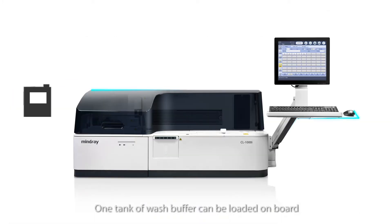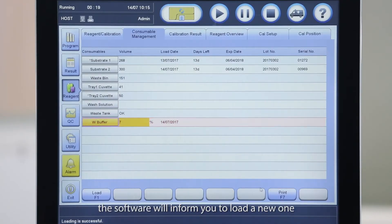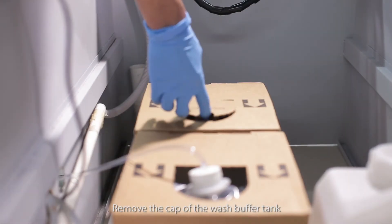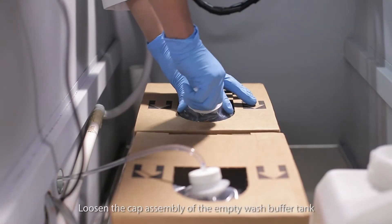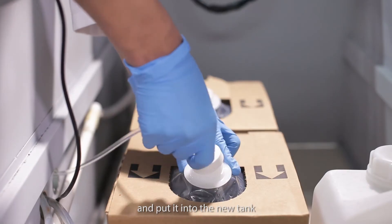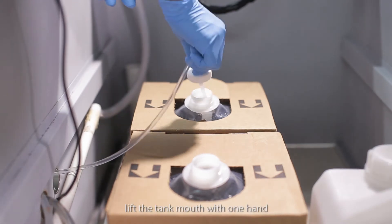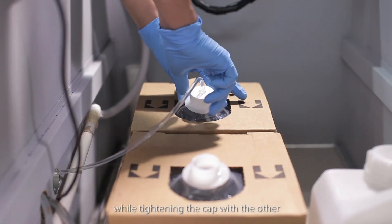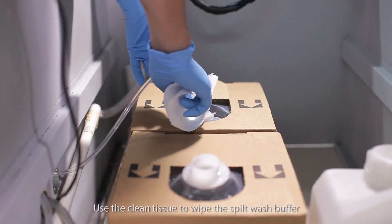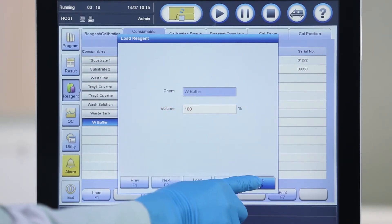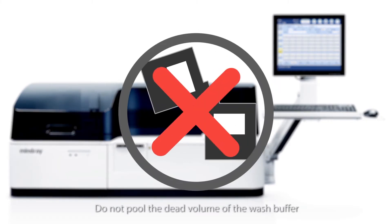One tank of wash buffer can be loaded on board. When it is finished, the software will inform you to load a new one. You can do this when the analyzer is running. Go to the consumable management screen. Open the reagent load screen of wash buffer. Remove the cap of the wash buffer tank. Loosen the cap assembly of the empty wash buffer tank and put it into the new tank. Do not contaminate the cap assembly. When installing the cap assembly, lift the tank mouth with one hand while tightening the cap with the other. Use a clean tissue to wipe the spilt wash buffer. Enter the volume information and click load. Do not pool the dead volume of the wash buffer in case of contamination.